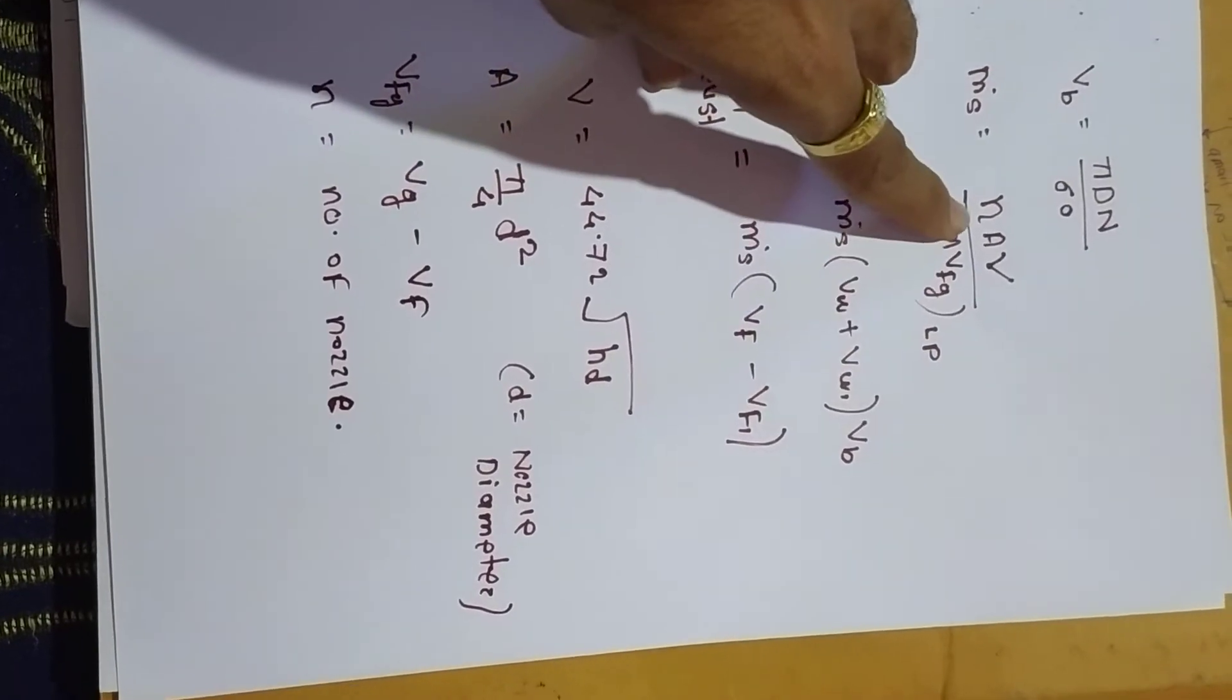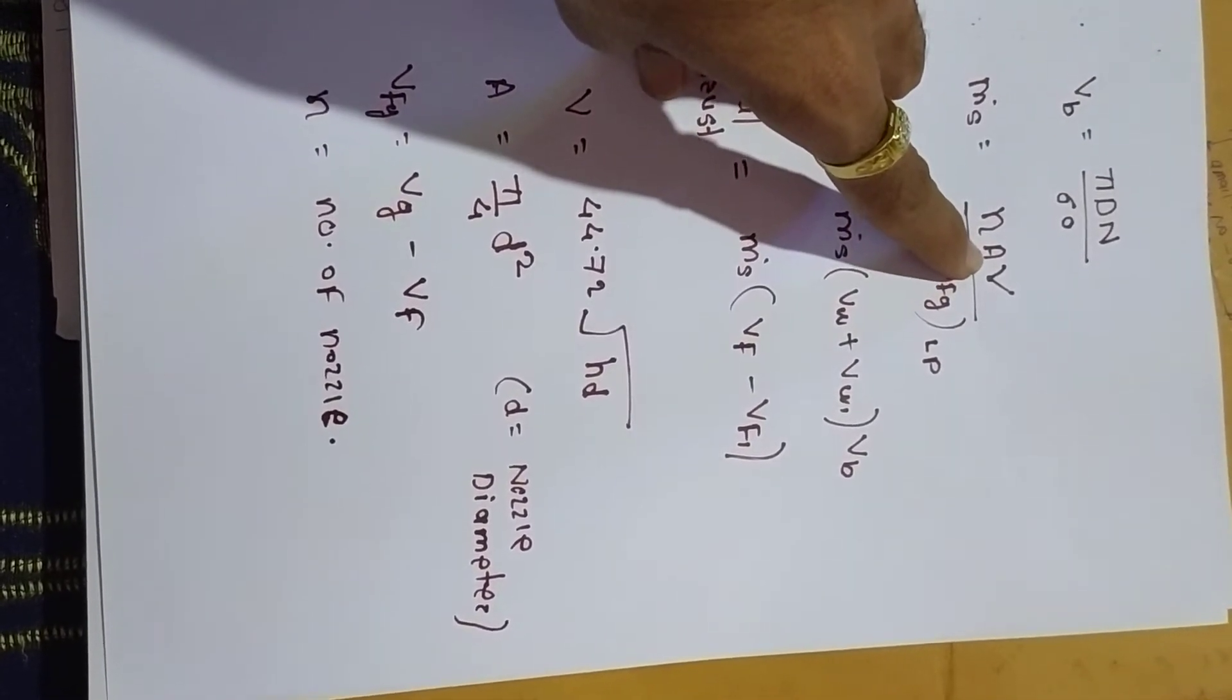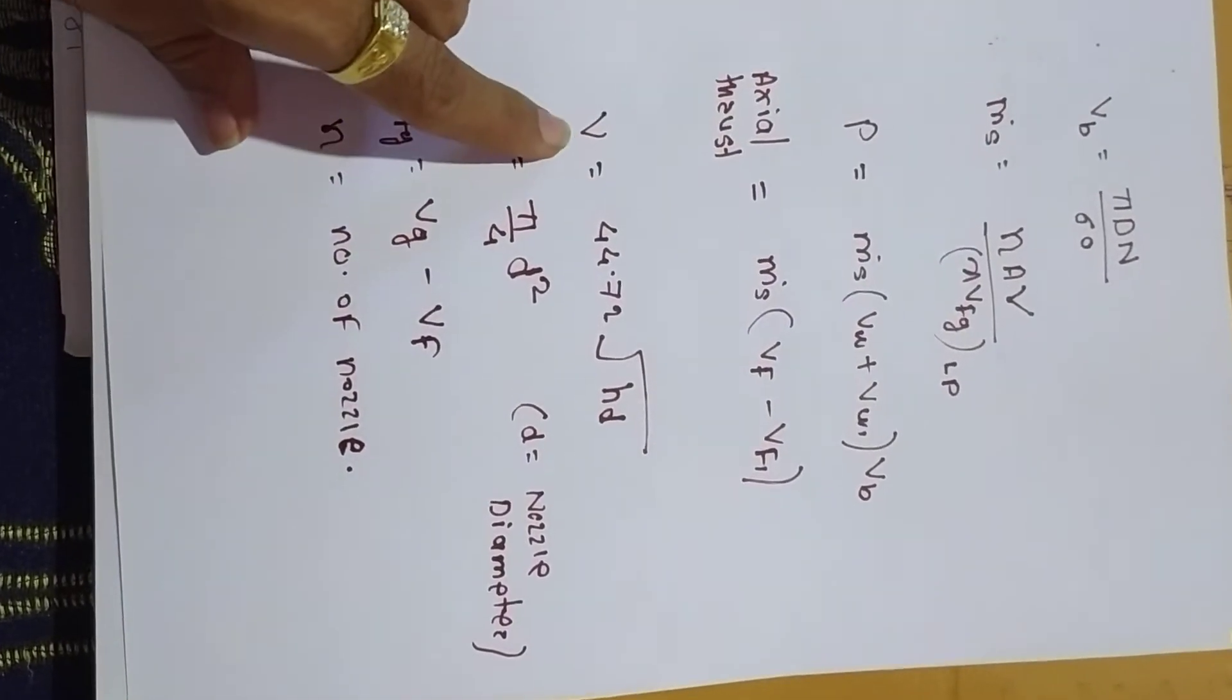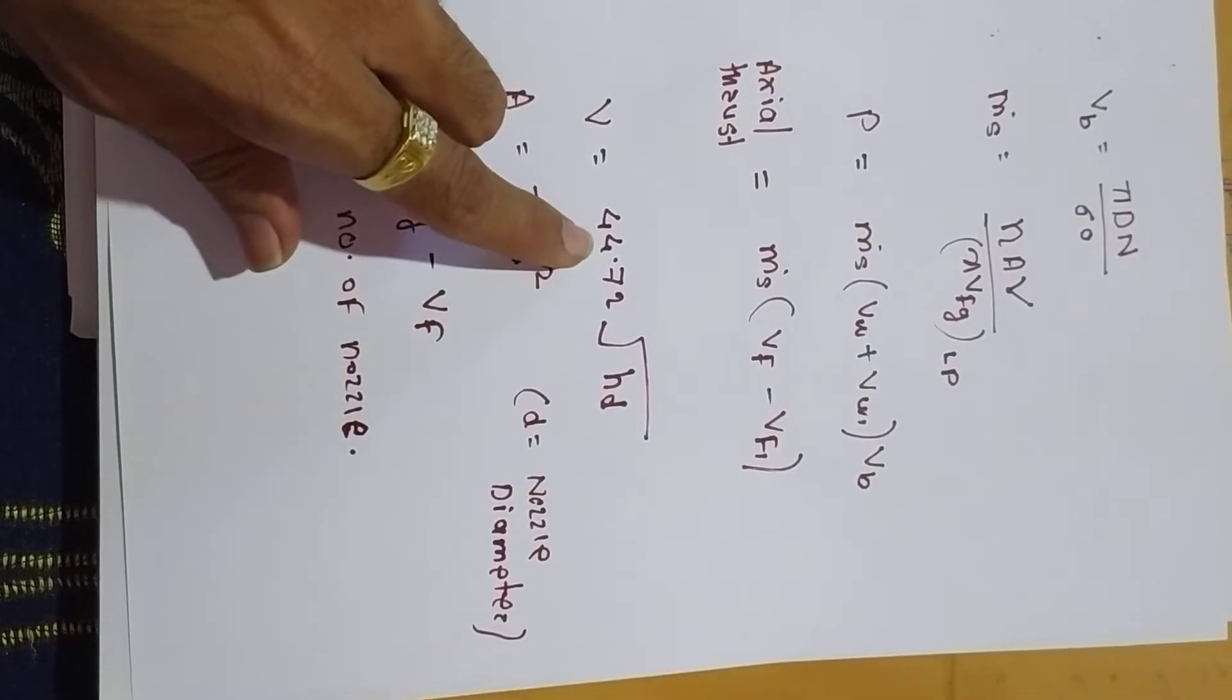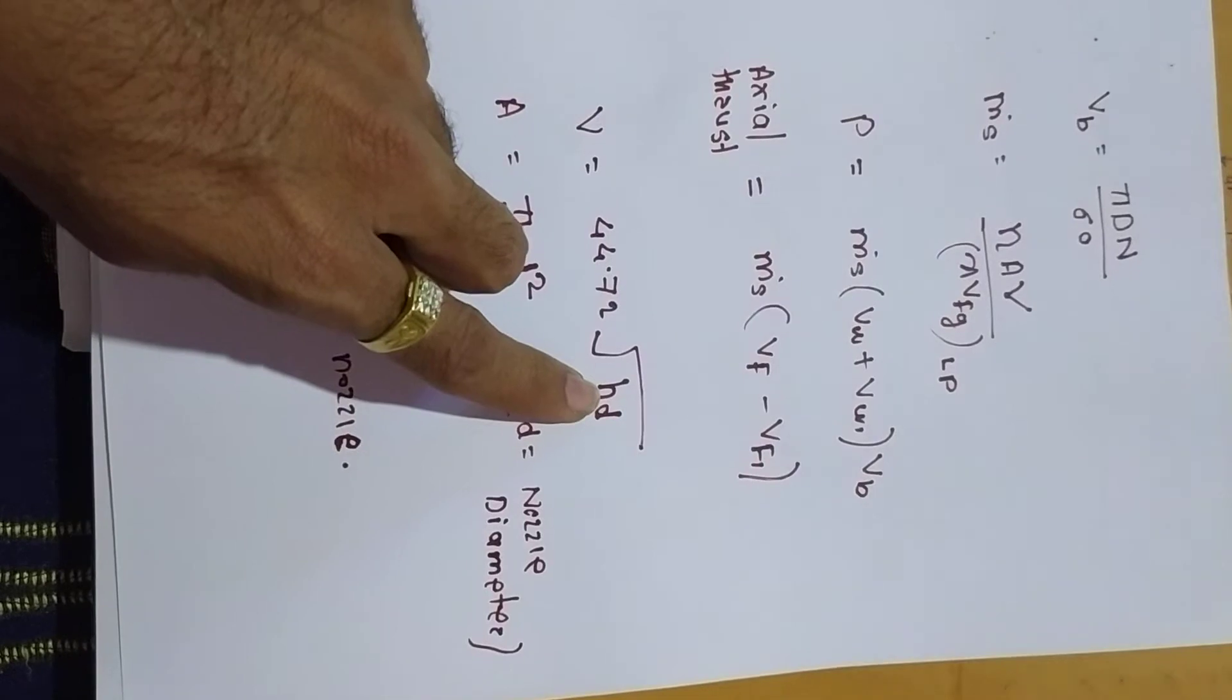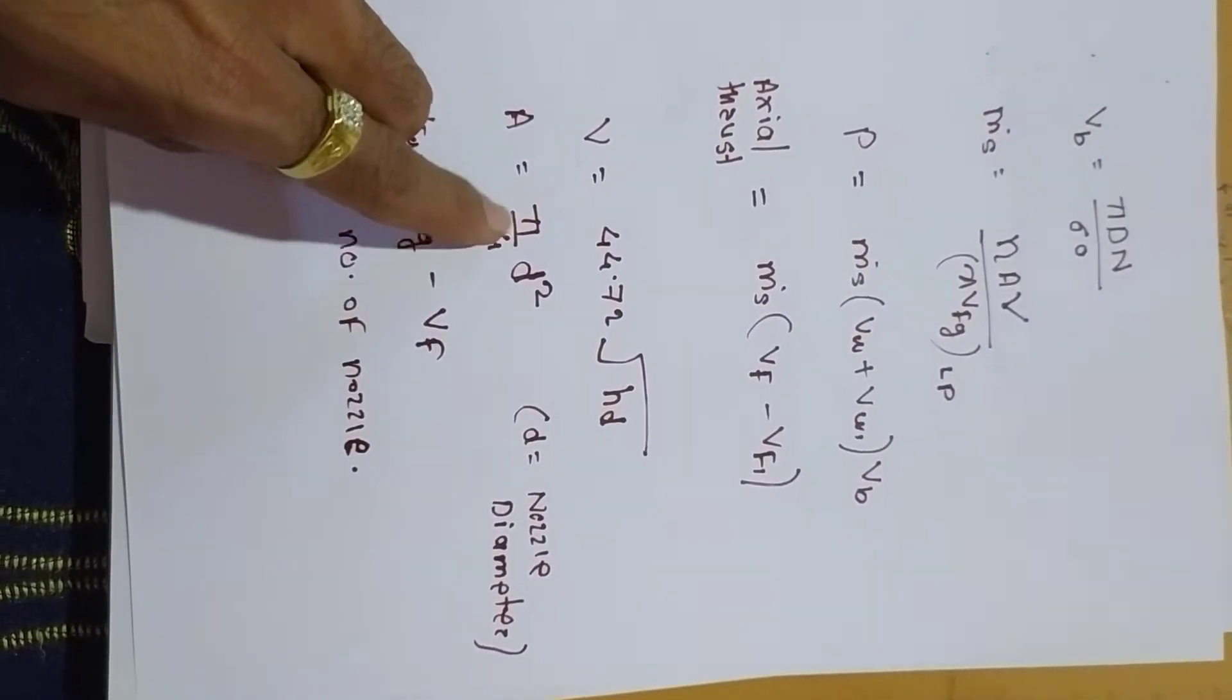N is the number of nozzles, A is the area of nozzle. Now how to calculate V? From a previous formula, V equals 44.72 times the square root of HD, where HD is enthalpy drop. We can calculate enthalpy drop using Mollier chart.